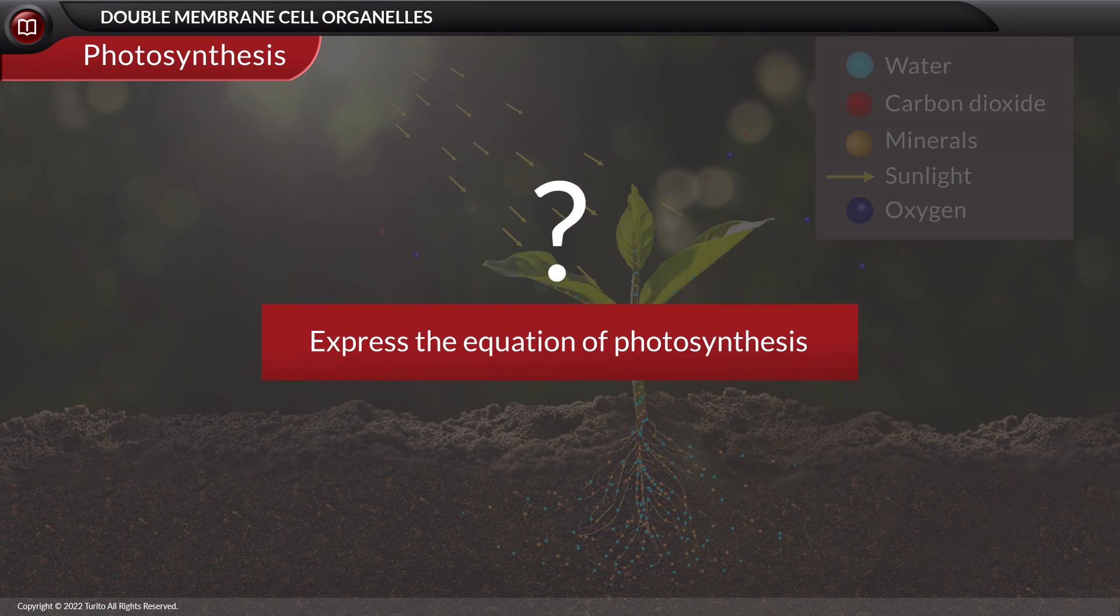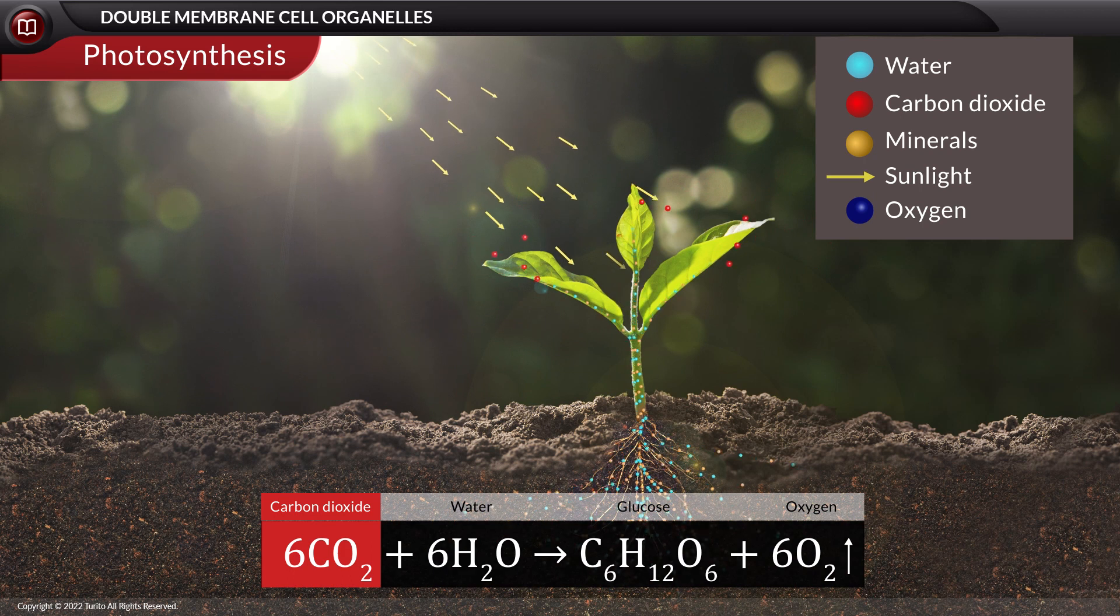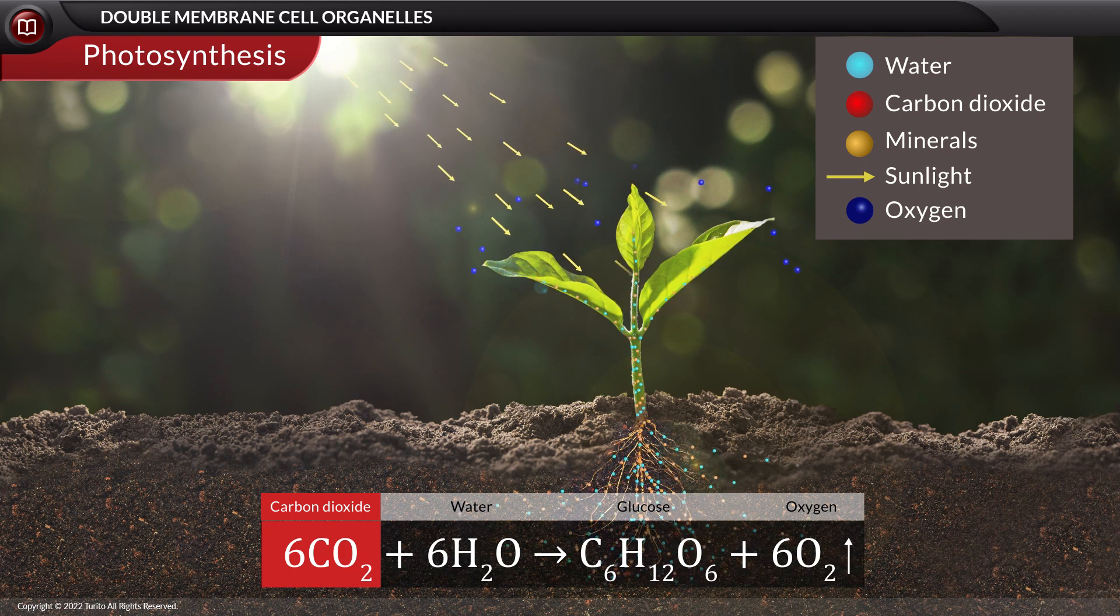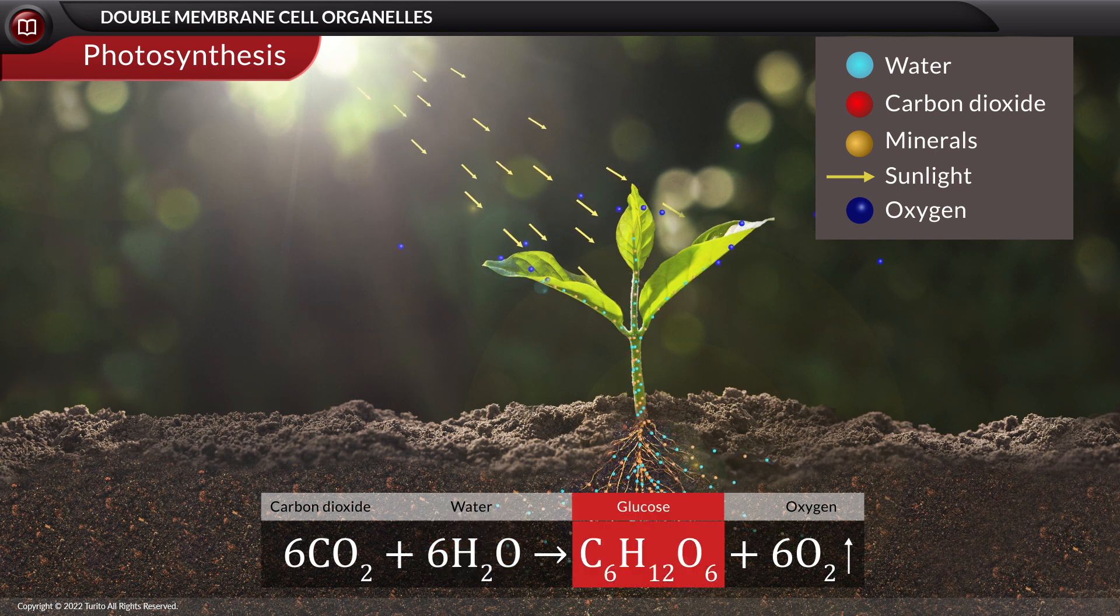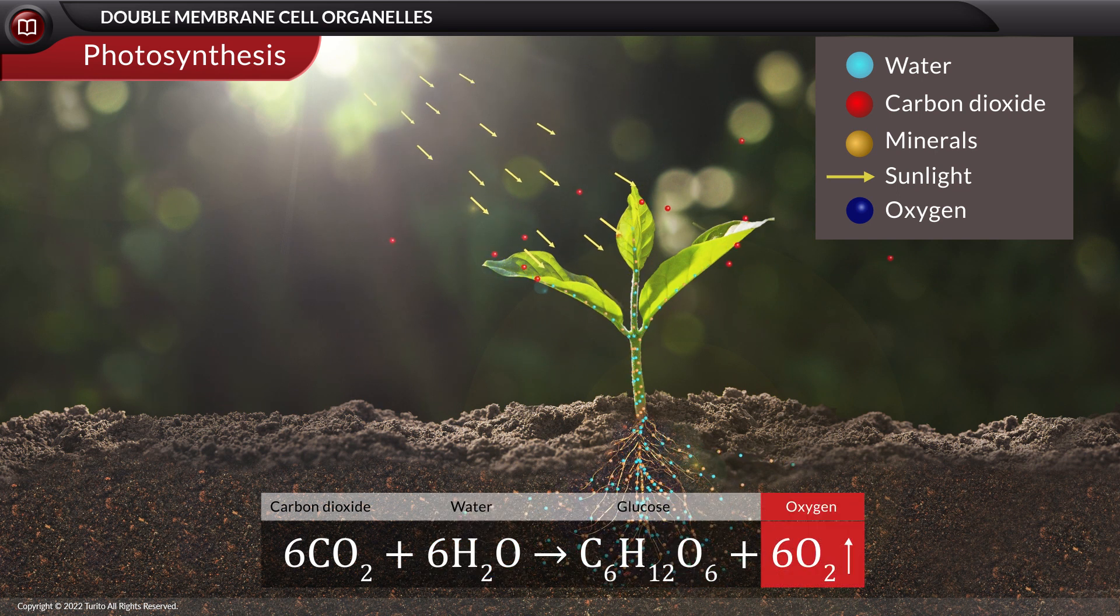Express the equation of photosynthesis. During photosynthesis, six molecules of carbon dioxide and six molecules of water are utilized to generate one molecule of glucose and six molecules of oxygen.